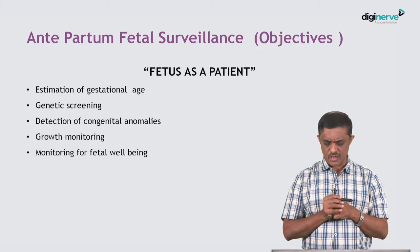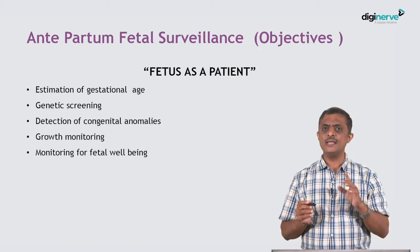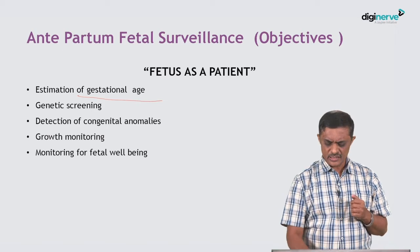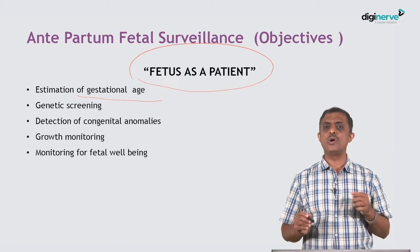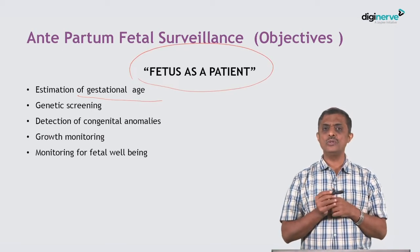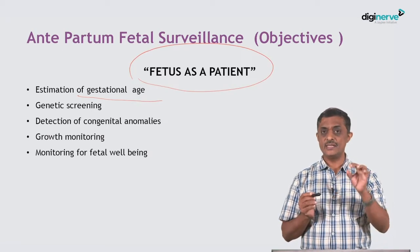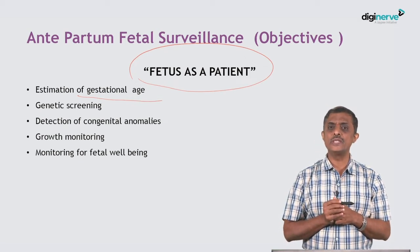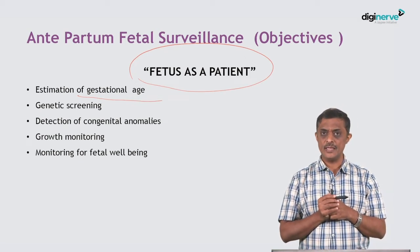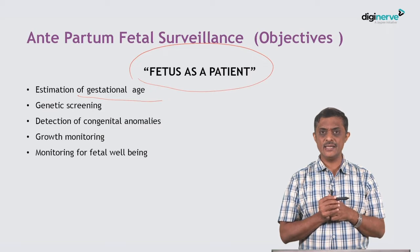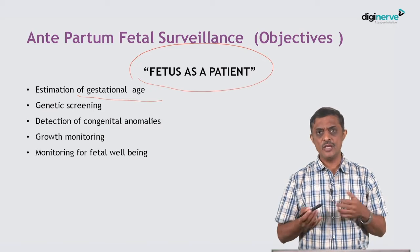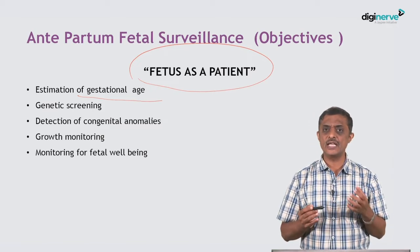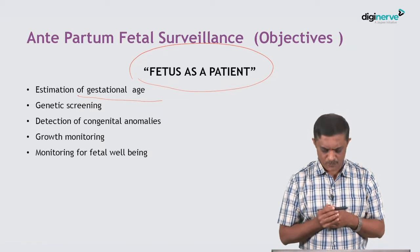Antepartum surveillance — what are the objectives? First, I should be sure about the gestational age. The fetus is my patient, so I need to know the age of this fetus very accurately. Then I need to know the genetic composition of the baby — this is called genetic screening. It may not always be invasive; there are non-invasive techniques which can give us a clue whether we are dealing with aneuploidies.